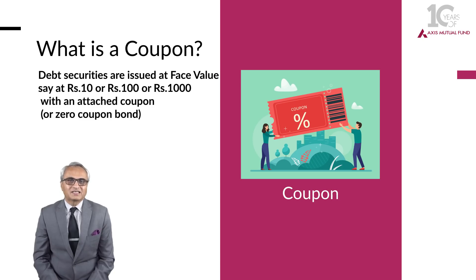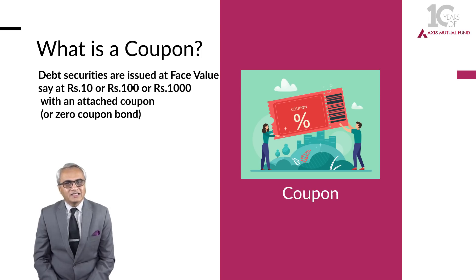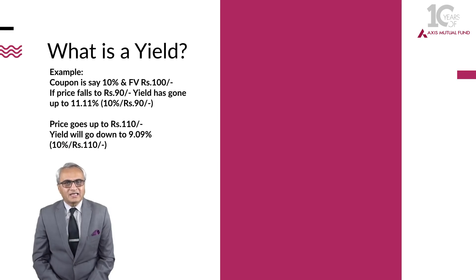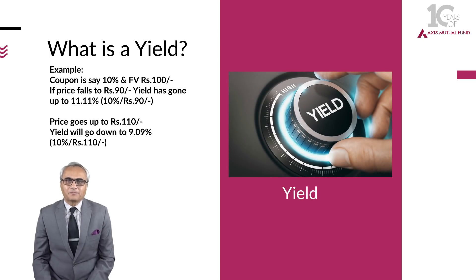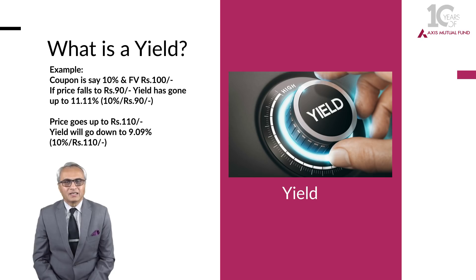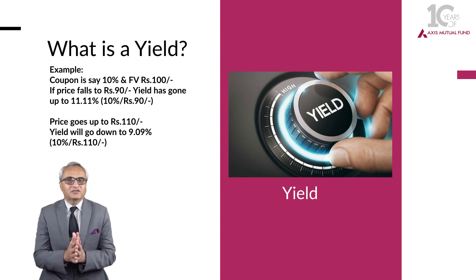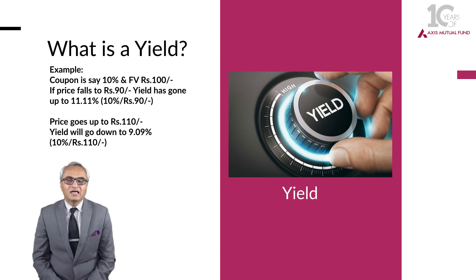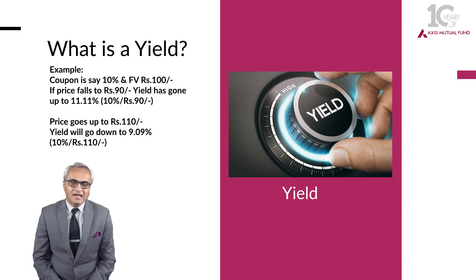Now if this investor holds it till its maturity — in this case for 5 years — his yield to maturity will be equal to the coupon, which is 10%. As against that, if an instrument is bought in the secondary market by an investor at a price different from the original face value, his yield will change based on the market price he is paying. Let us assume the price of that bond has gone down to 90 rupees; the yield for this investor will be 11.11%, which is equal to 10% divided by 90 rupees.